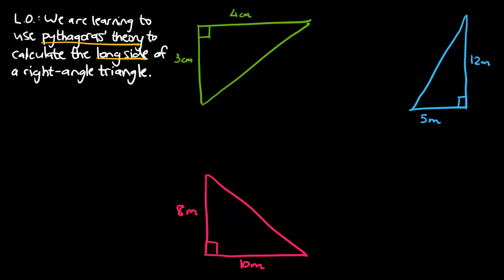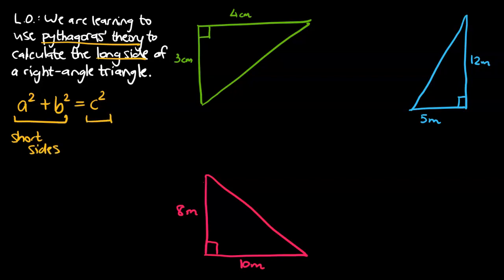So we're going to start our video. Hopefully you'll recall from the previous one, but a squared plus b squared is equal to c squared. That's the formula that we're going to use to calculate any side of the triangle, but today we're focusing on the long side. And as a reminder, a and b relate to the short sides of our right angle triangle, and c relates to the long side.